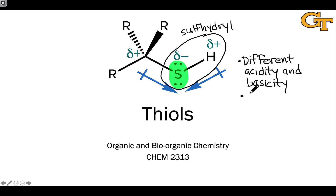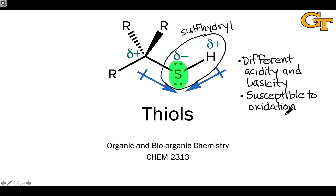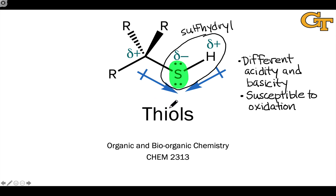The second point about thiols worth noting — and the same is true for thioethers, which we'll see later — is that this functional group, and the sulfur specifically, is susceptible to oxidation. This means the sulfur atom is prone to form bonds with electrophilic oxygen through the donation of one of its lone pairs. This can result in the formation of new S-S bonds, as well as new functional groups involving S-O linkages, such as the sulfoxide, sulfone, and sulfonic acid.